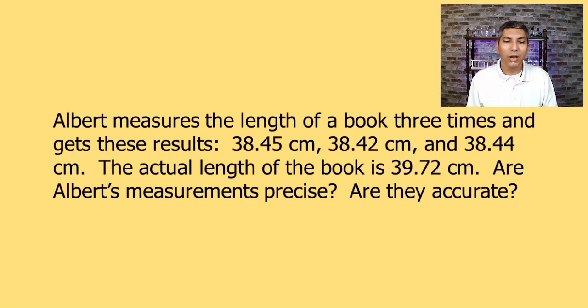Well let's answer the first question first. Are Albert's measurements precise? I would say yes because his three measurements are very close to each other. In fact there's very little variance. The only variance is in that last decimal place that he's reported and even those are fairly close to each other. So his measurements are precise. But are they accurate? I would say no they're not because even though his answers are close to each other, they're well over one centimeter away from the correct answer. So here we have a case of precise but inaccurate results.